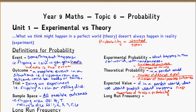And the last one we're going to look at here is long run frequency. And this is basically tracking how many times an event occurs during lots of trials.